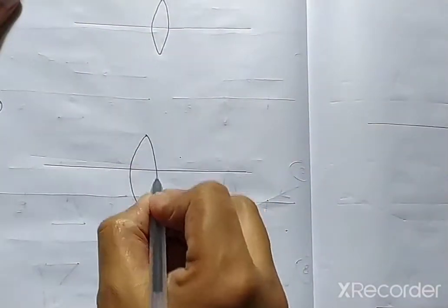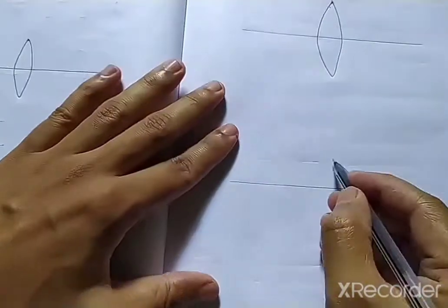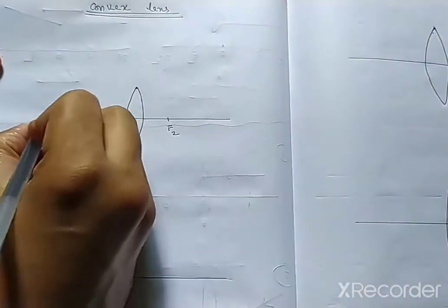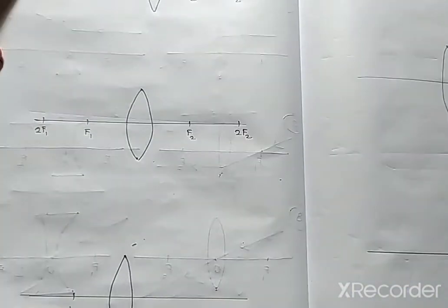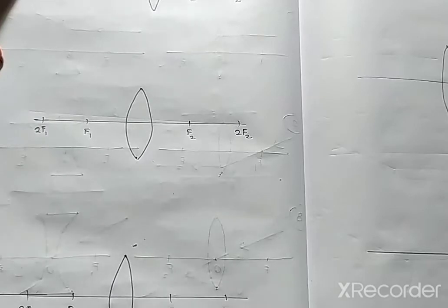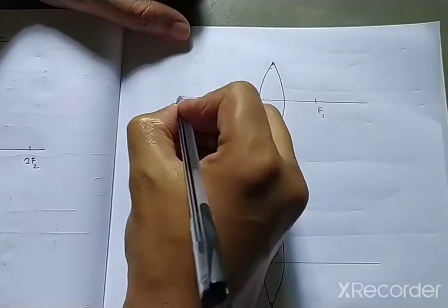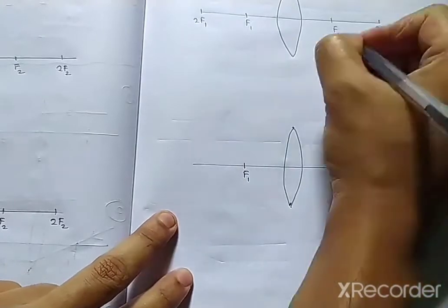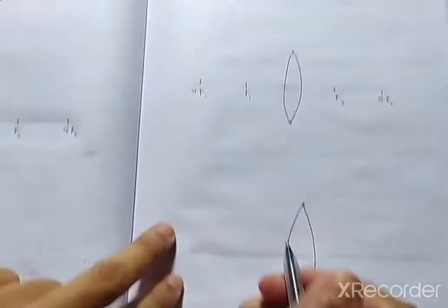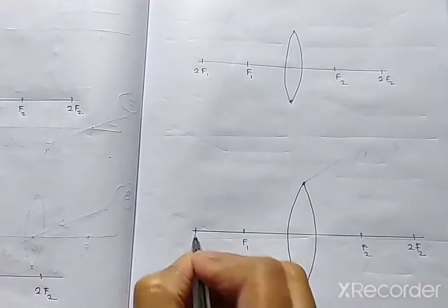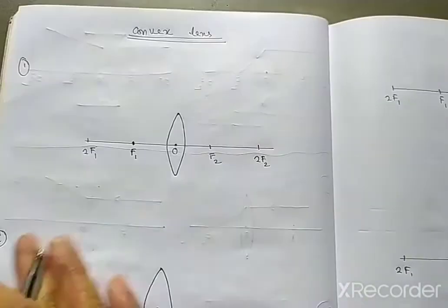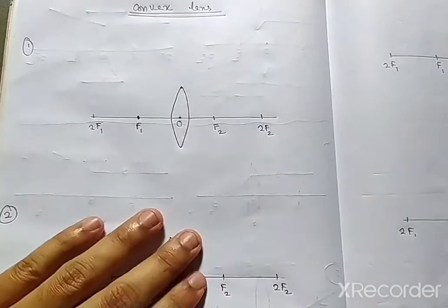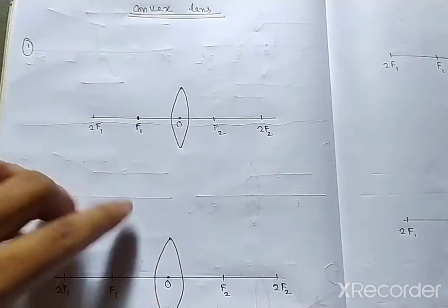You have to draw six convex lens diagrams, each labeled with F1, F2, 2F1, and 2F2 on both sides. The optical center is marked at the center of each convex lens.